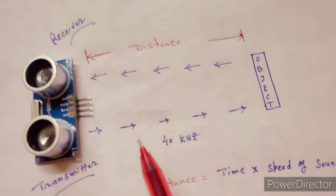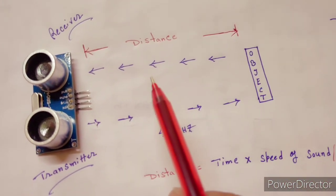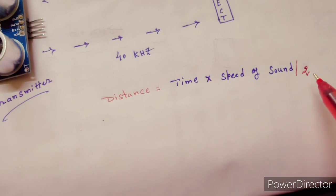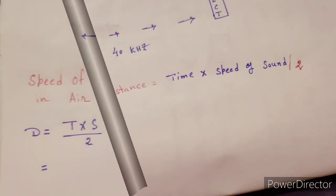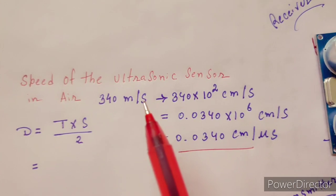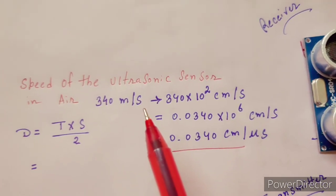Since the sound travels the same distance two times, the distance equals time times speed divided by two. Speed of the ultrasonic sensor in air is 340 meters per second. We have to convert it to microseconds.